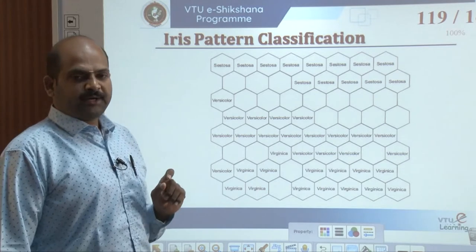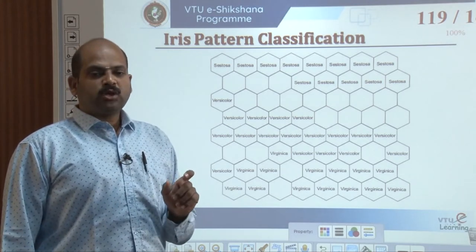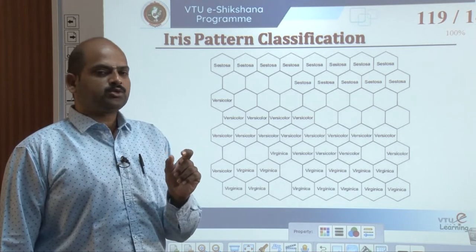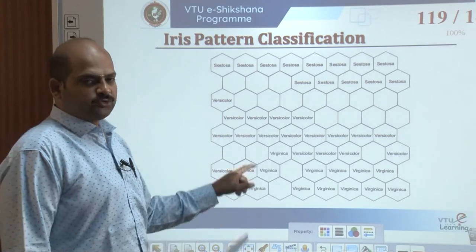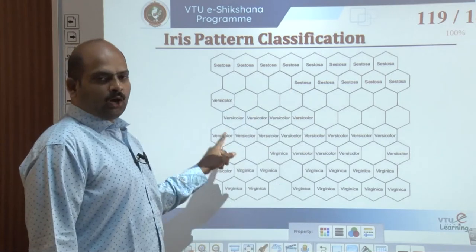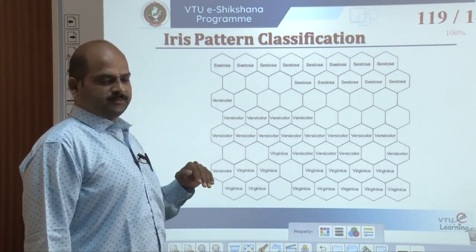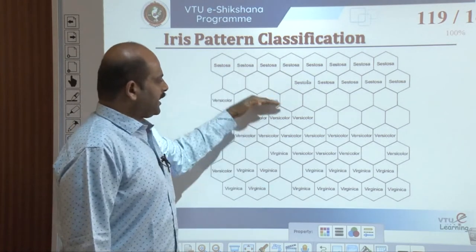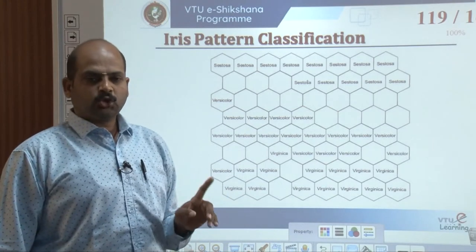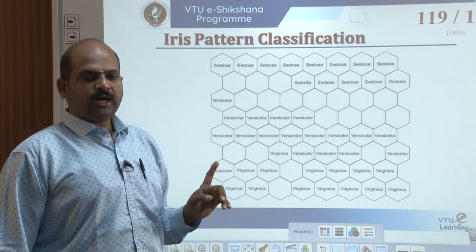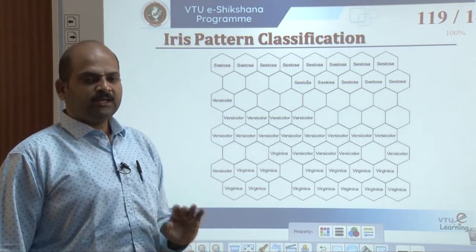The species label corresponding to each pattern is assigned to the neuron. Each neuron is finally assigned the label of the species whose patterns elicit a nominal response with the highest frequency. This figure shows how the species partition the map into three distinct regions — one for iris setosa, another for iris versicolor, and the third for iris virginica. The blank nodes never win the competition for any of the three species patterns.